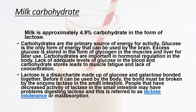Next is milk carbohydrate. Carbohydrates are also present in milk — approximately 4.9% carbohydrate in the form of lactose. Carbohydrates are the primary source of energy. Glucose is the only form of energy that can be used by the brain. Excess glucose is stored in the form of glycogen in the muscles and liver for later use. Carbohydrates are important in hormonal regulation in the body. Lack of adequate levels of glucose in the blood and carbohydrate stores leads to muscle fatigue and lack of concentration.